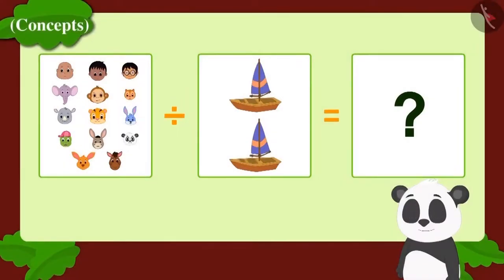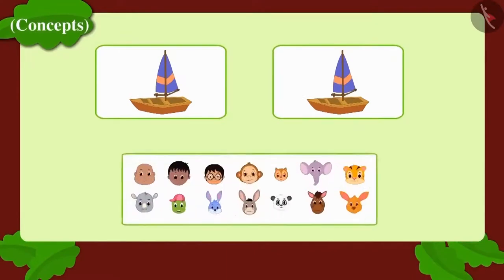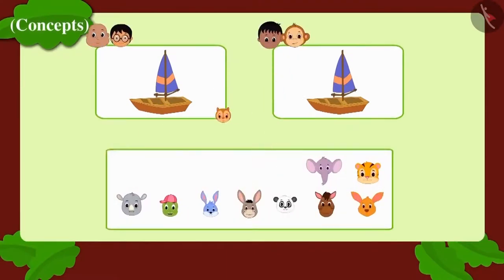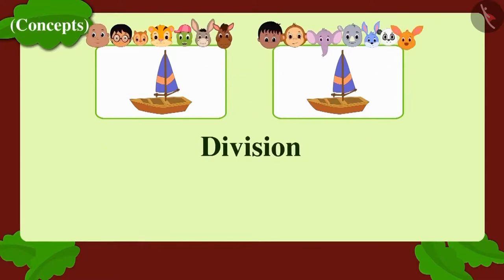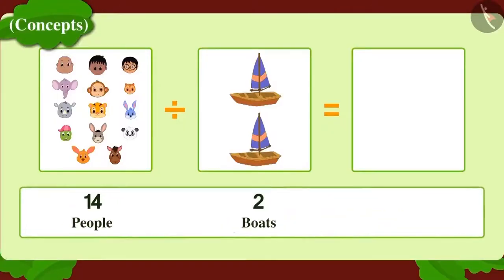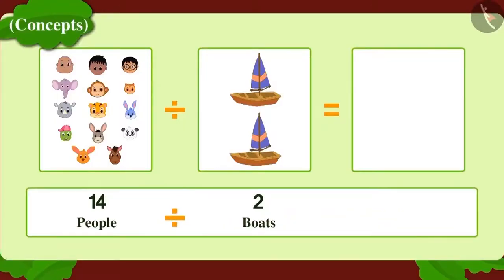Golu will have to use the method of division here. Whenever we need to divide objects equally between people or have to make equal groups, we use the method of division. Using division, Golu found that 7 people could go in each boat.